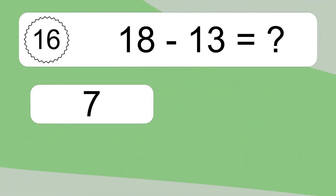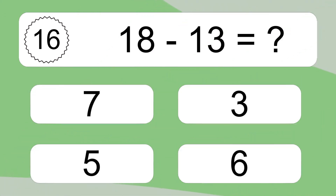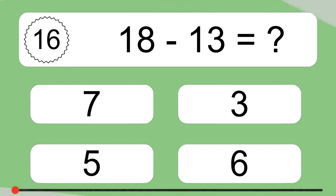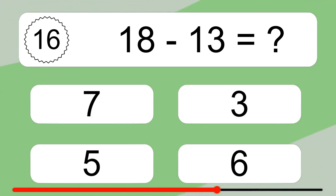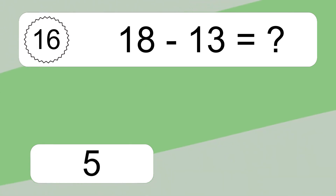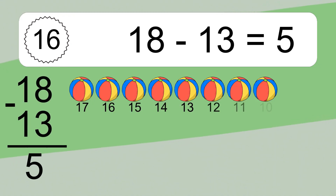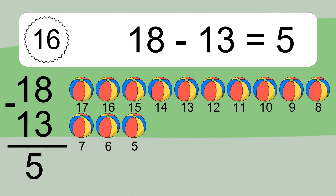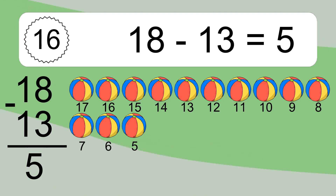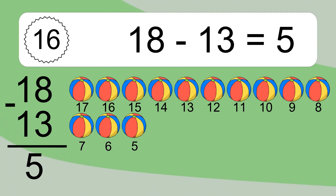18 minus 13 equals what? 18 minus 13 equals 5. Let's count it: 17, 16, 15, 14, 13, 12, 11, 10, 9, 8, 7, 6, 5.